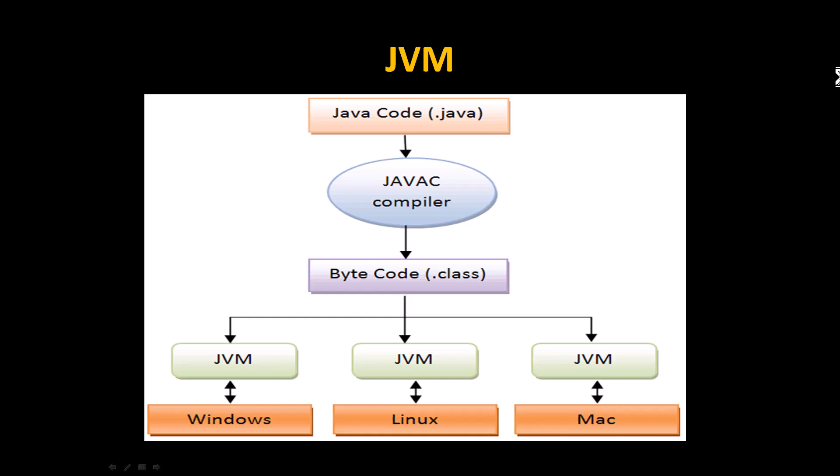Similarly, JVM identifies if you are using a Linux operating system such as Ubuntu or Fedora, and converts the bytecode accordingly. It also identifies Mac OS and compiles the program. Once the .class file is created, it can be executed anywhere. This is the main feature of Java — write once and execute anywhere, on any operating system or machine architecture.